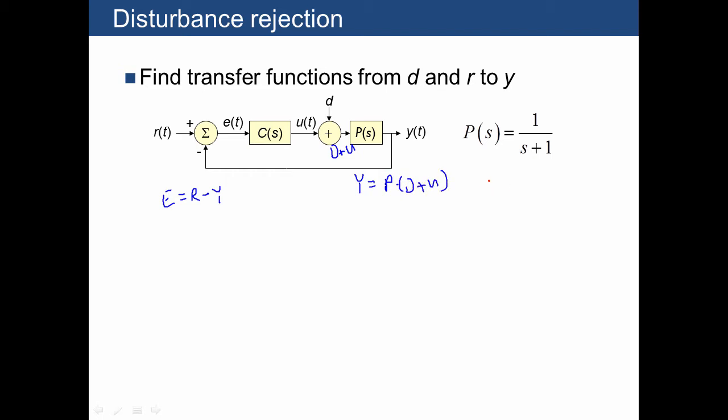And then U, in turn, we also know, is just going to be equal to C times the error signal. So let's combine all of these together, C times the error signal, C times R minus Y. And then we have to plug U into this equation, so we get P times D plus P times CR minus CY. Let's combine all of the Y terms together. Solving for Y, we get P divided by 1 plus CP times D plus CP divided by 1 plus CP times R.